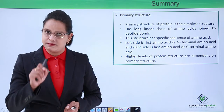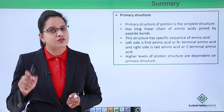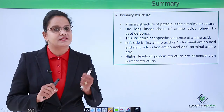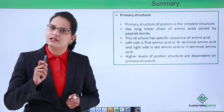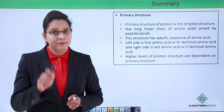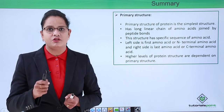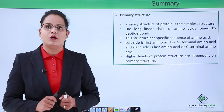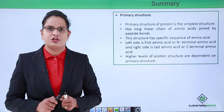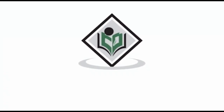To summarize: the primary structure is the simplest structure of the protein. It contains a linear sequence of amino acids joined by peptide bonds. The left-hand side is the N-terminal and the right-hand side is the C-terminal of the peptide chain. This primary structure is responsible for higher levels of protein structure. In the next video we will learn about the secondary structure of proteins. Thank you — TutorialsPoint, simply easy learning.